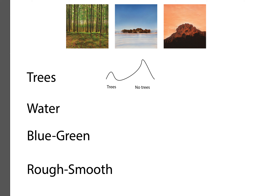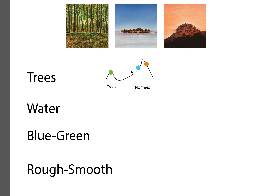Thinking about where each image lies on that probability distribution: the first (green) image falls right at the top of this distribution, the blue image has some trees but is mostly in the 'no trees' zone, and the orange image has even fewer trees. So each image has some float value associated with what we'll call our 'tree' vector.